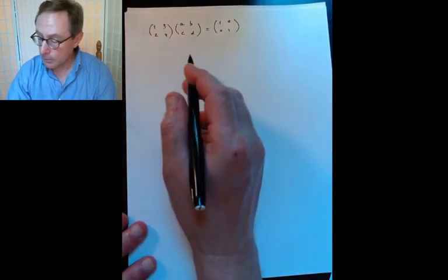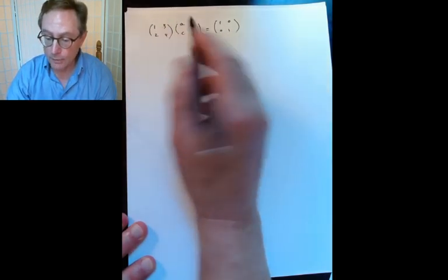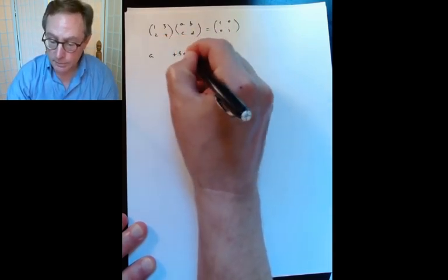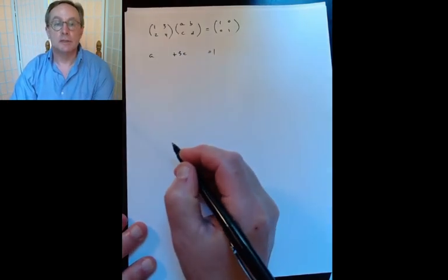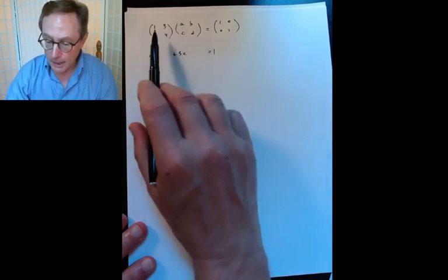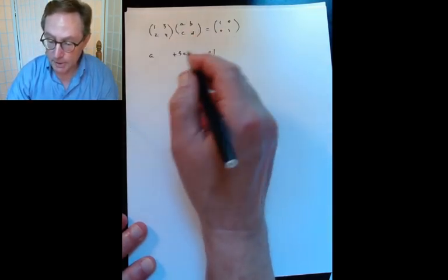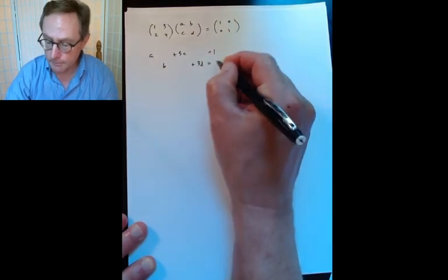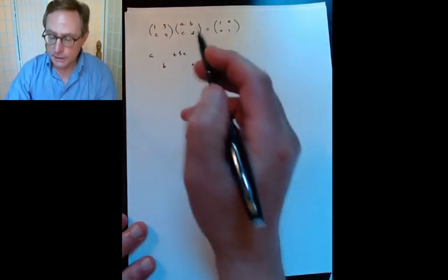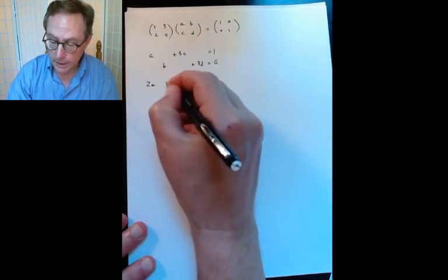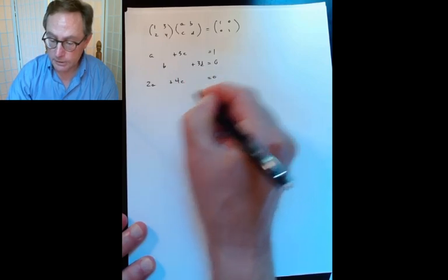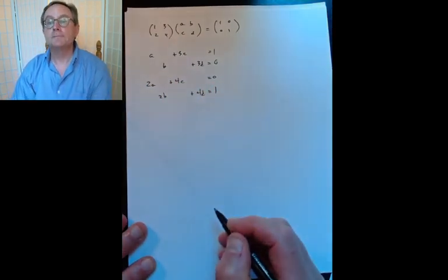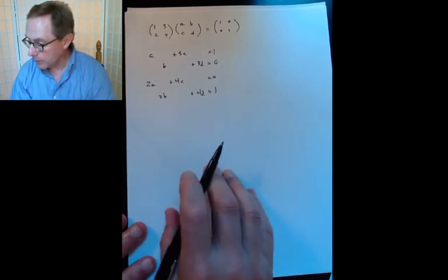So if you think about how the parts combine, what happens is the row 1, 3 combines with the column A, C to give this 1. So I'm simply looking at A plus 3C equals 1, and of course you can guess where I'm going with this. We're going to do Gauss's method on a linear system.